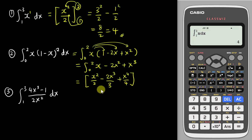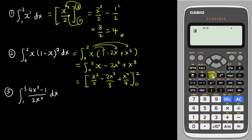The limits are 0 to 2, so we substitute 2 into x and subtract the result for 0. Since substituting 0 gives zero, we only need to evaluate at 2. Using the calculator: two squared over two, minus two cubed over three, plus two to the power four over four.